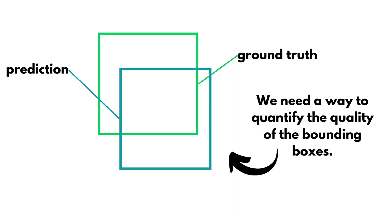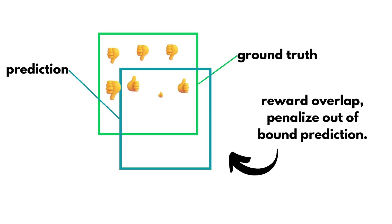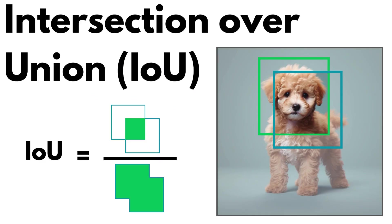We need to find a way to quantify the quality of the bounding boxes generated in order to assess how well our model is doing, so as to reward overlap and punish out-of-bound predictions. This is where the intersection over union similarity metric comes into play.